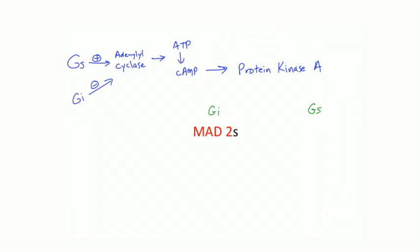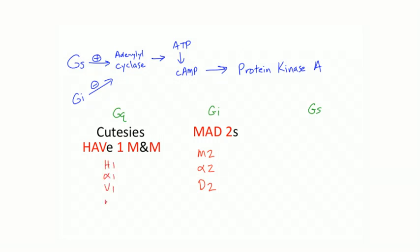The mnemonic for Gi-linked receptors is 'the mad twos' — mad and inhibit both have a negative connotation. M in mad is for M2, A is for alpha 2, and D is for dopamine D2 receptors. If you remember 'cutesies have one M&M' for Gq and 'the mad twos' for Gi, then all other G protein receptors default to Gs: beta 1, beta 2, D1, H2, and V2.